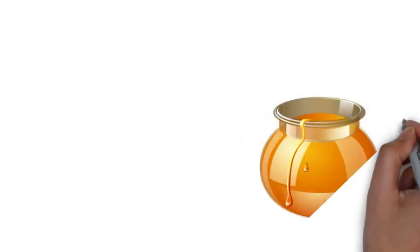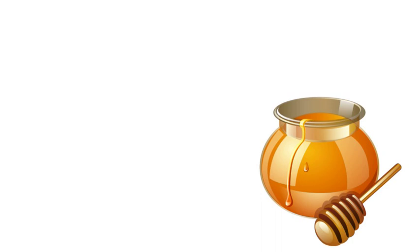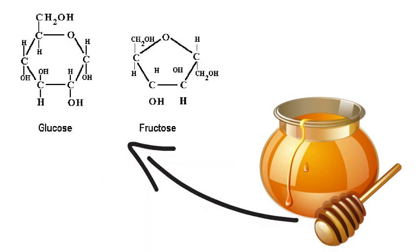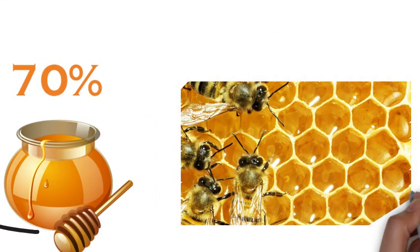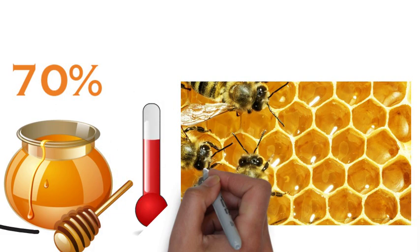Coming to the science of the crystallization process, honey is a highly concentrated solution of monosaccharides called dextrose and levulose that constitute more than 70% of honey. When honey is present in clean wax comb, it is in the liquid form because honey bees maintain around 35 to 40 degrees of temperature.